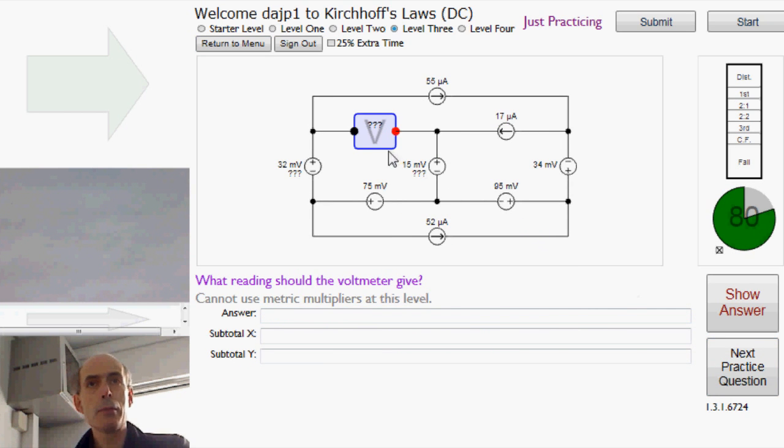The other type of question might be a voltmeter question. And here, the idea is you've got to get from the black to the red, only going through nodes of which you know what the voltage is. Don't worry about the question marks. At the moment, we've got to get from there to there.